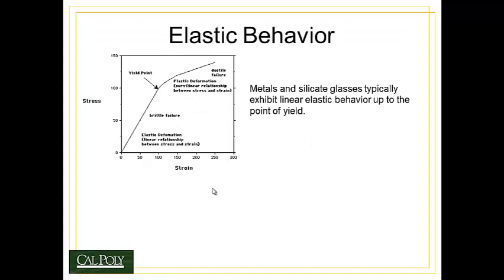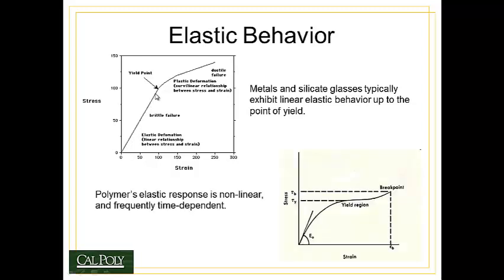Metals and silicates are also what we call linear elastic, meaning that up until the yield point, the response between stress and strain is very linear and follows Hooke's law. This is where polymers differ from other materials, in that they have a non-linear response to stress and strain. Here we see the blown-up version of the stress-strain diagram for a polymer, and note that the elastic portion of the curve before the yield region is non-linear. So Hooke's law clearly does not apply to a polymer.